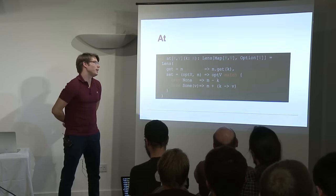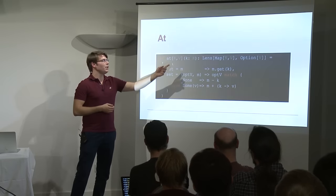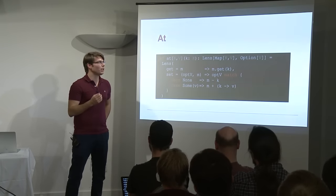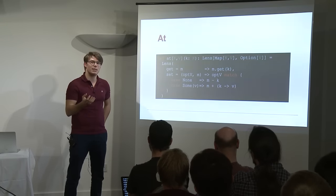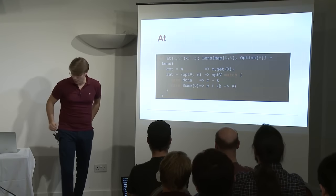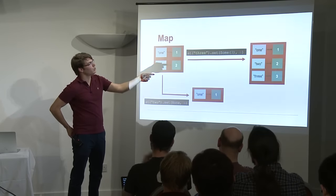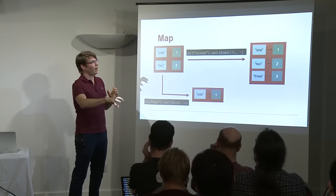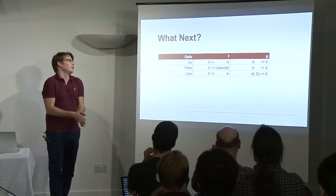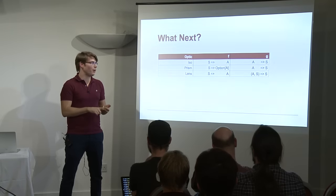Let's look at more fancy lenses. We can define an 'at' optic that focuses into any element inside a map — we just give a key. We get a lens between any Map K V and an Option of V. This Option of V is very powerful: setting Some means inserting, and setting None means deleting an element. So here we can add key three with value three by setting Some(3), and it will insert both key and value. Or we can delete it using None.